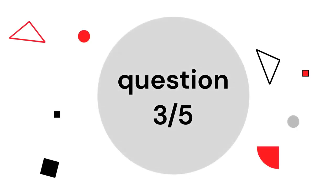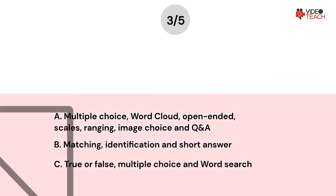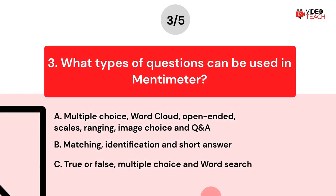Question number three. What types of questions can be used in Mentimeter? Option A: multiple choice, word cloud, open-ended, scales, ranging, image choice, and questions and answers.